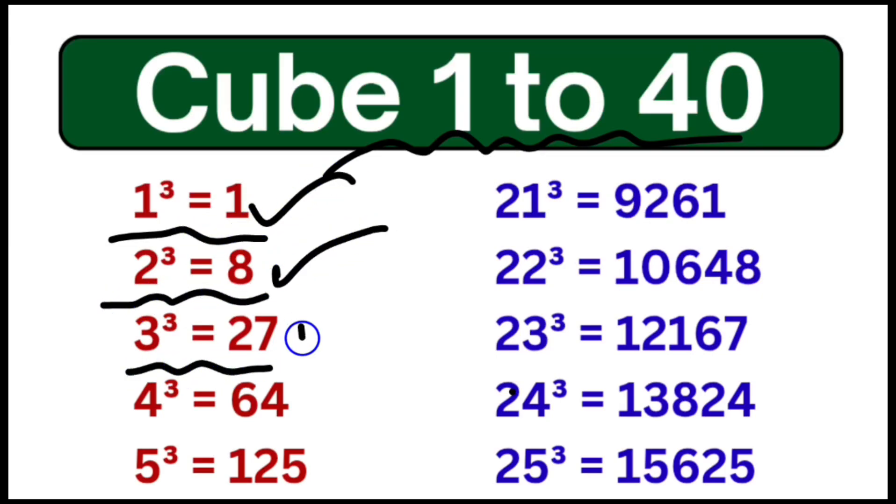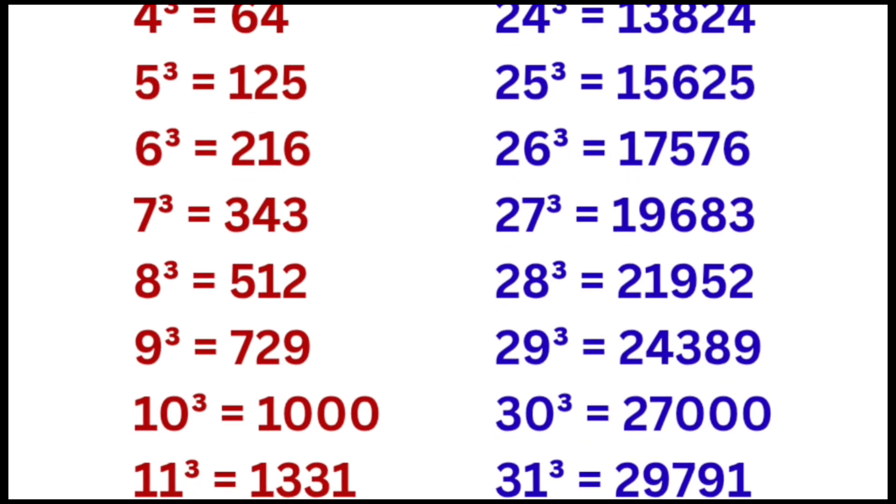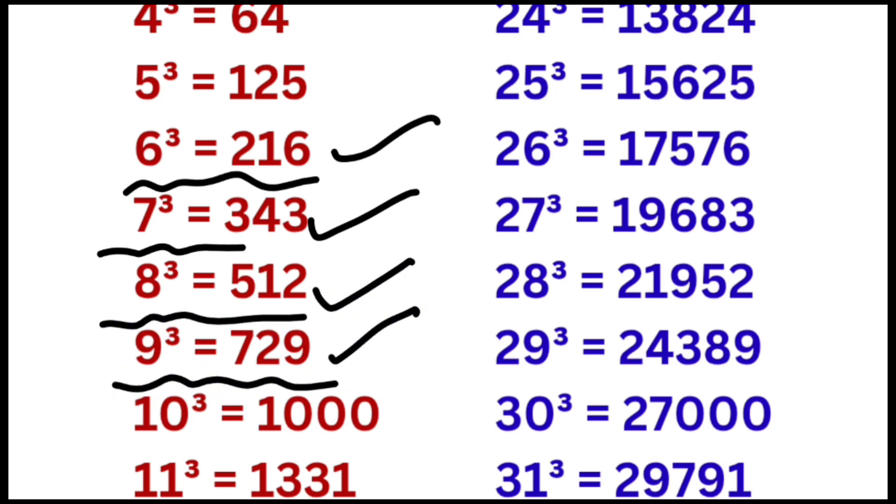Cube of 3 is equal to 27, cube of 4 is equal to 64, cube of 5 is equal to 125, cube of 6 is equal to 216, cube of 7 is equal to 343, cube of 8 is equal to 512, cube of 9 is equal to 729, cube of 10 is equal to 1000.